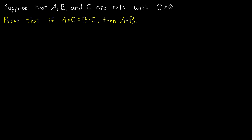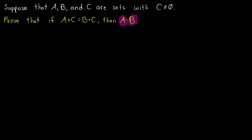They can be empty. Now let's get into the proof. It'll be a pretty typical set equality proof. We're going to prove that A is a subset of B, and then we have to prove that B is a subset of A, but both directions are basically the same, so we're only going to do one of them.